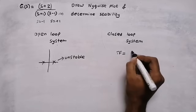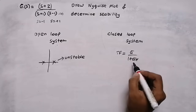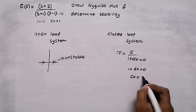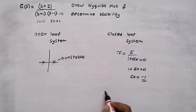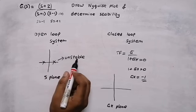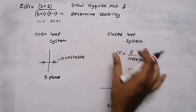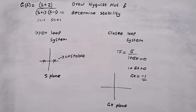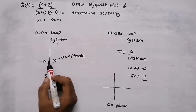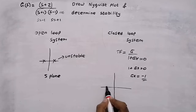The transfer function of a closed loop system is G divided by 1 plus GH. For getting poles we equate the denominator equal to zero, giving us 1 plus GH equal to zero, that means GH equal to minus 1. For determining stability of the closed loop system we draw a plot in the GH plane. Here we determine stability with respect to the point minus 1 comma 0.